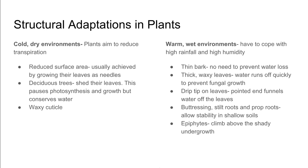Plants in warm and wet environments have different adaptations to cope with high rainfall and humidity. They may have thin bark since there is no need to prevent water loss. They can have thick waxy leaves, causing water to run off quickly to prevent fungal growth. They may have a drip tip — where the end of the leaf is pointed — so water funnels off the leaf. They may have different root types for stability in shallow soils, and there may be epiphytes, which are plants that climb above the shady undergrowth.